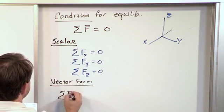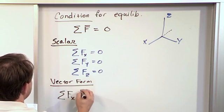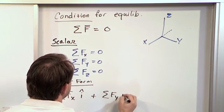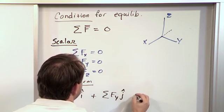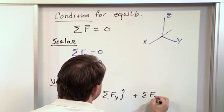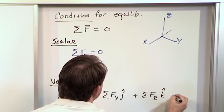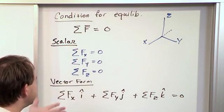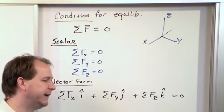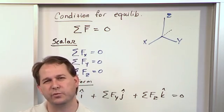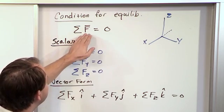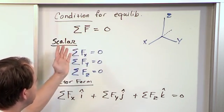The sum of the forces in the x direction, we'll put an i hat vector, plus the sum of the forces in the y direction, we'll put a j hat vector, plus the sum of the forces in the z direction, k hat vector, equals zero. Everything on the board here is saying exactly the same thing, just written a little differently. I'm mostly writing this down so when you read your book, you're not confused what they're trying to tell you. The master condition is that the sum of all the vectors acting on the point is zero.